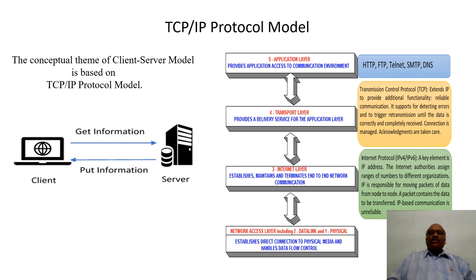The five layers are transformed to a four-layer model by combining the physical layer and the data handling layer as one unit, followed by the network layer — now termed the internet layer — then the transport layer, and above that the application layer. This four-layer model is also a subset of the seven-layer OSI reference model, where the logical functionalities of the session layer and presentation layer are incorporated into the application layer. The protocols carried upon on the respective layers will be understood in the due course of our study.